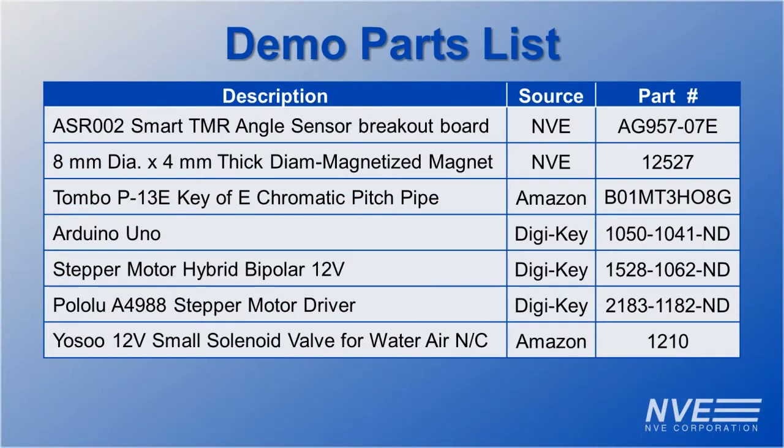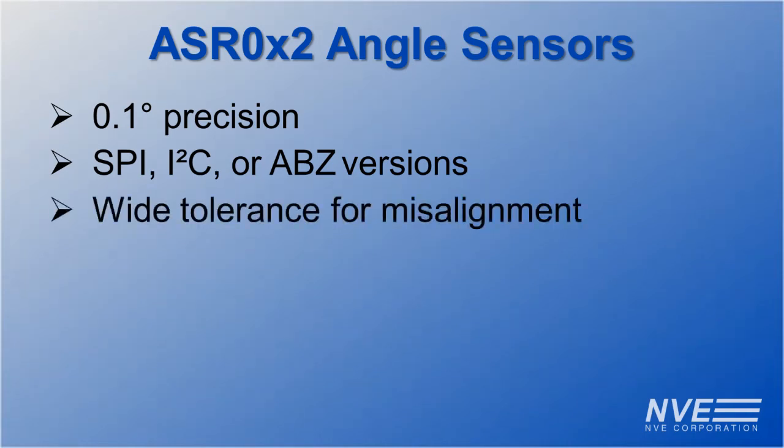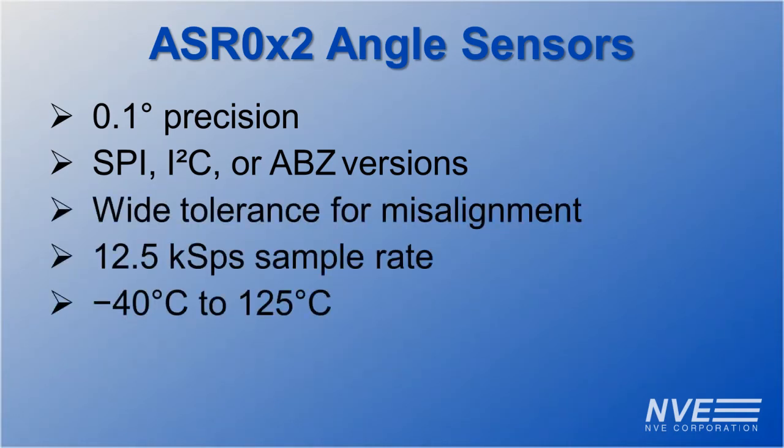Here are the key components we used for this demo. Key ASR002 specifications are 0.1 degree precision, various interface options, wide field operating range, high speed, full temperature range, and ultra miniature.